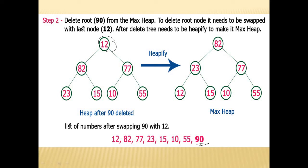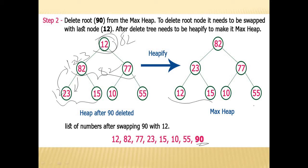After placing 90 in its sorted position, we heapify: find the maximum among the children, which is 82, and replace 12 with it. Then 12 moves down; its children are 23 and 15. Find the maximum among them — that is 23 — and replace. So now 82 is the root, with 23 and 77 as children, and 15 and 12 adjusted accordingly. Again repeat the same process: replace the root element 82 with the last value 55.